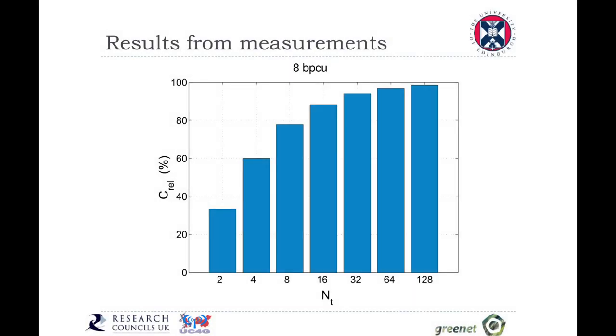What this diagram shows is a comparison of the relative computational complexity of spatial modulation compared to a conventional MIMO system. On the x-axis, we show the number of transmit antennas in the system. If, for example, we look at 128 antennas, we notice that spatial modulation achieves a complexity reduction of about 98%.